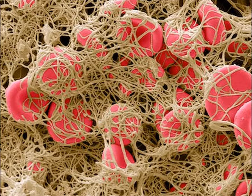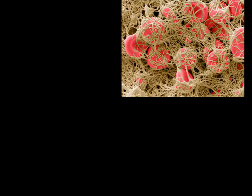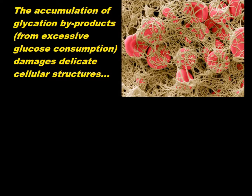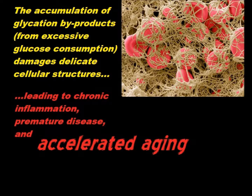How does glycation develop? Glucose in the body is a critical source of cellular energy. However, the accumulation of glucose-derived byproducts — or glycation byproducts — damages delicate cellular structures. The pathological impact is chronic inflammation, premature disease, and, as you can imagine, accelerated aging.